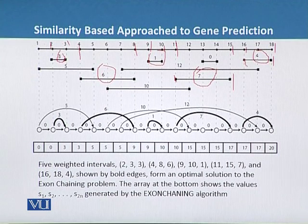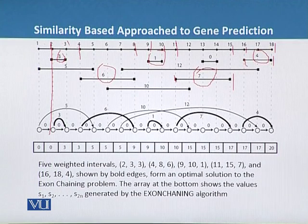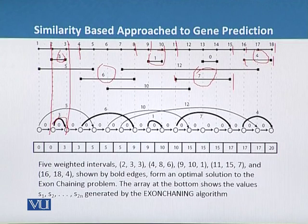So in the graphic display also we can write. We can say that this is the first 2, 3, 3 starting from 2 ending up at 3. So we will write at 2, 3 and a weight of 3.